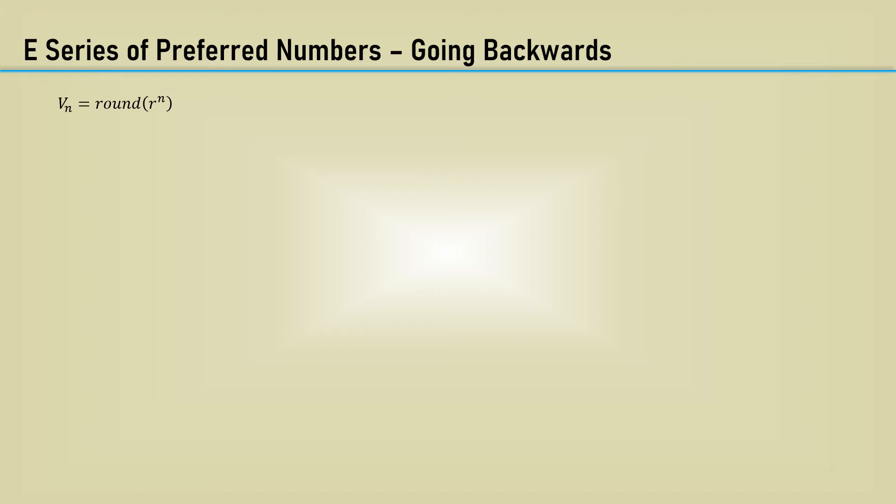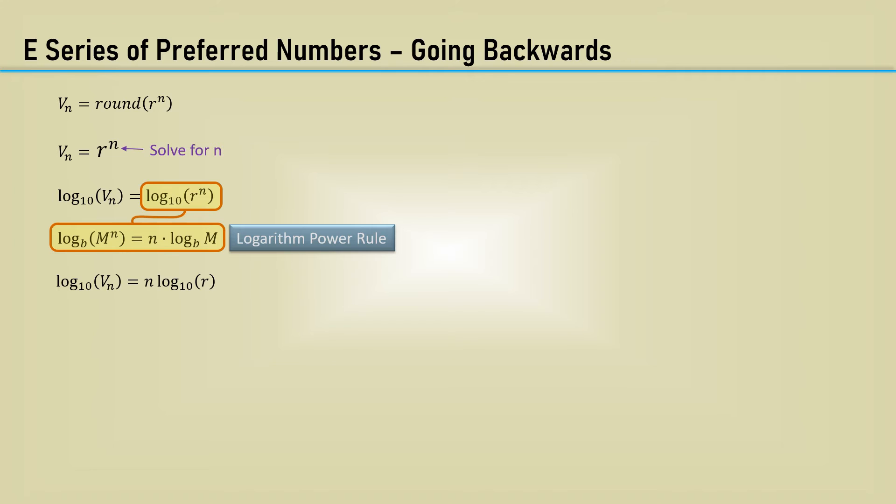Our objective is to find the nearest component value to our desired value, so we need to go backwards and solve for n. We take the log base 10 of each side of the equation and apply the logarithmic power rule, which moves n to the front of the equation. Then solving for n is simply the log of VN over the log of the common ratio R.